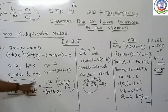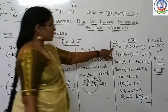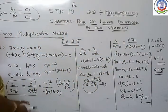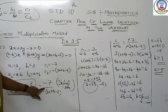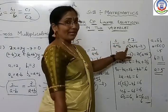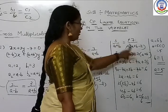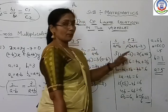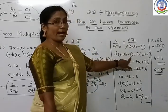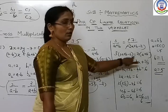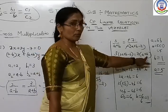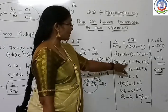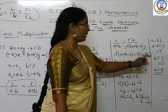Now equate the next two ratios: 3/(a+b) = −7/(−(3a+b−2)). The minus signs cancel, so cross multiply: 3(3a + b − 2) = 7(a + b). Expanding: 9a + 3b − 6 = 7a + 7b. Taking 7a to the left and 3b to the right: 9a − 7a + 3b − 7b = 6, which gives 2a − 4b = 6.